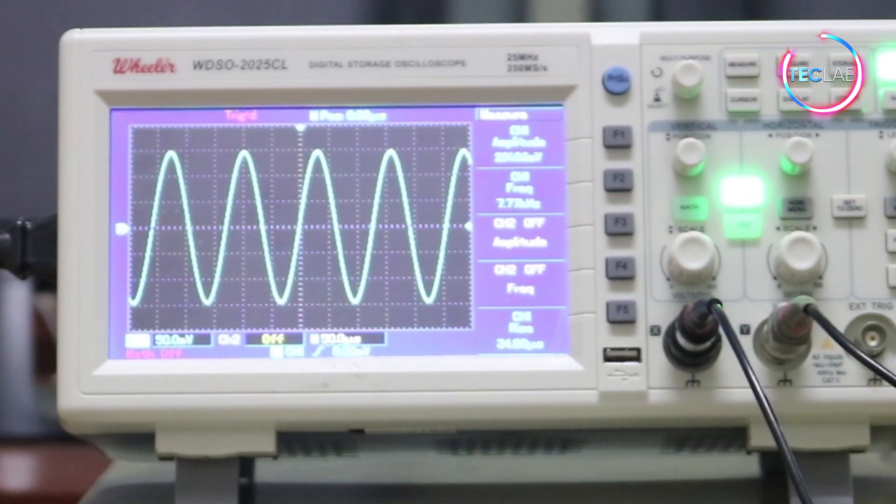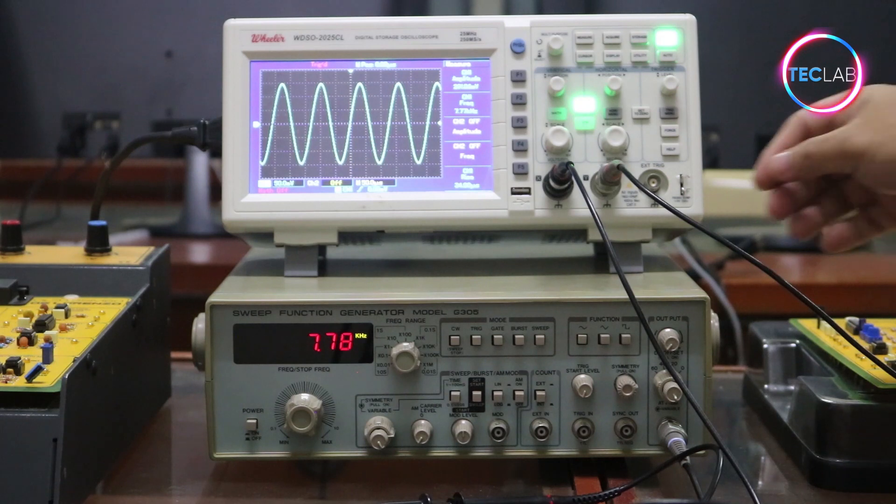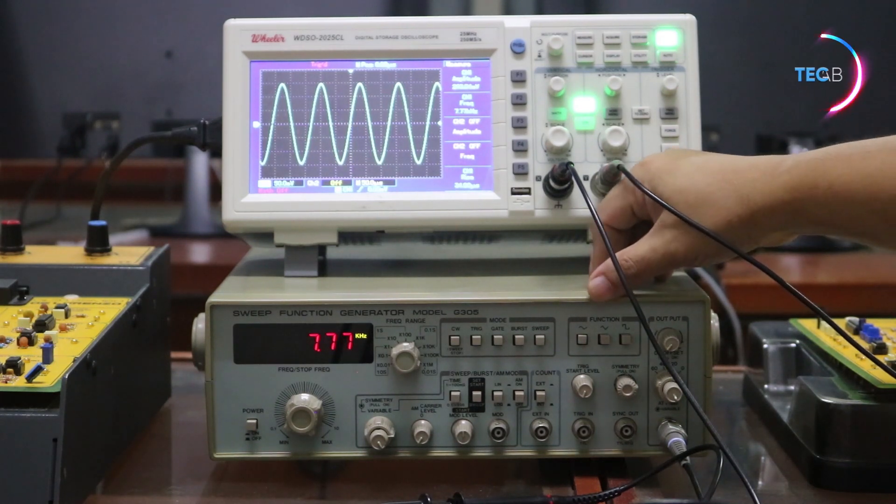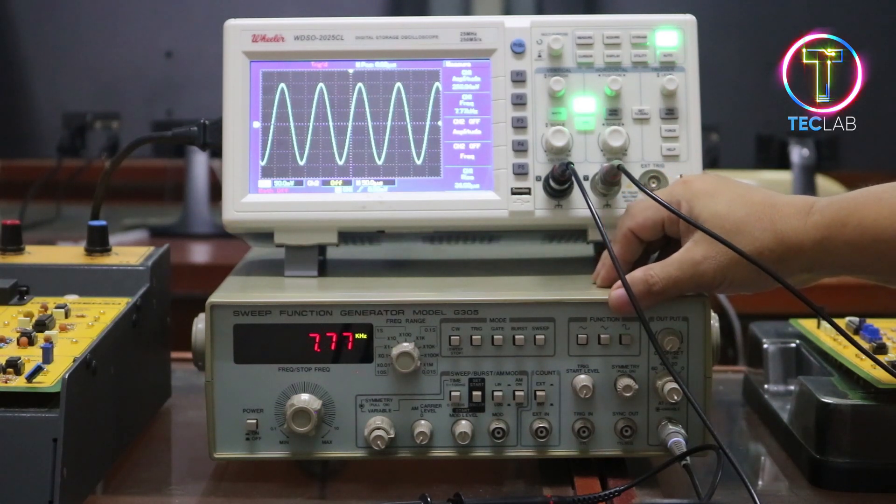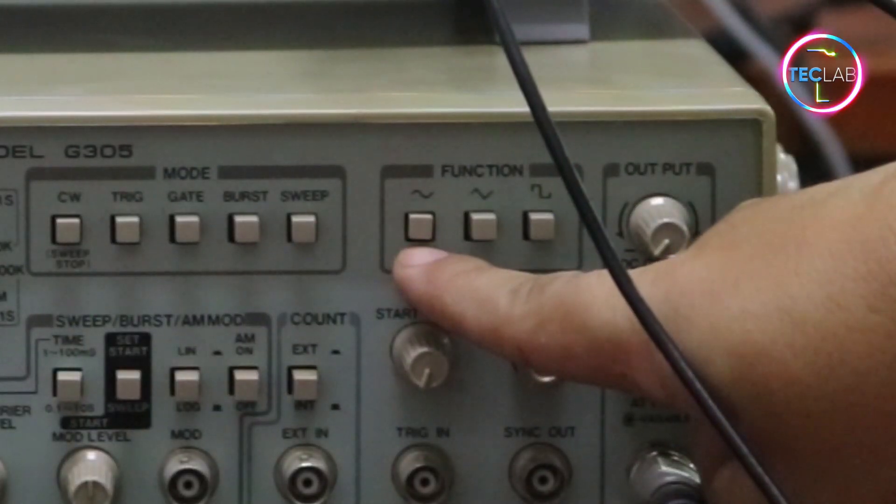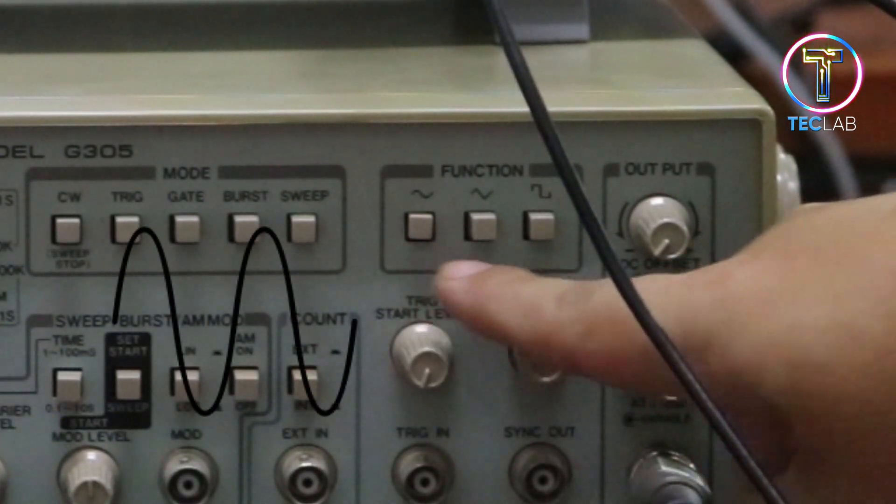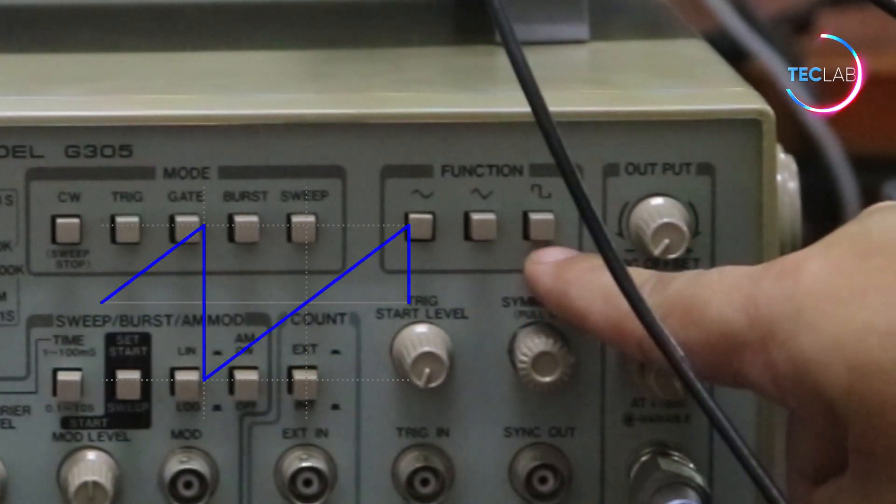A function generator can generate different waveforms. In this case, we are seeing sinusoidal signals, but we can change it into triangular signals or rectangular signal. You need to select which signal you need to use in your experiment. If you press this button here, it will give you a sinusoidal signal. If you push this button, you will get a triangular signal. And if you push this button, you will have a rectangular signal.